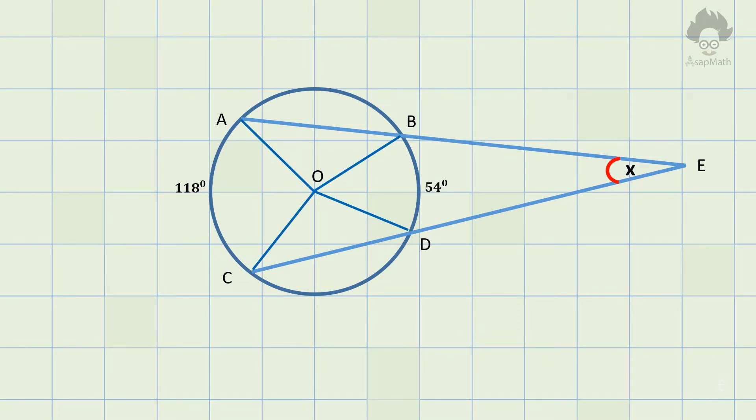Now join points A and C. Then we get the AOC triangle. It is an isosceles triangle because both AO and OC are radius of circle. Therefore, angle OAC equals angle OCA. We already know angle AOC. So, we can find the value of angle and it would be 31 degrees.